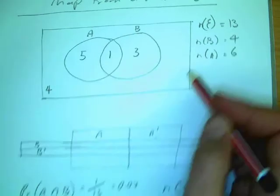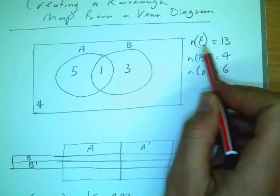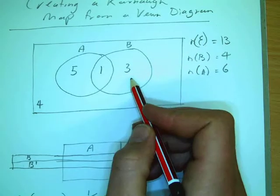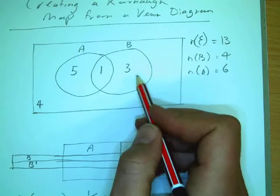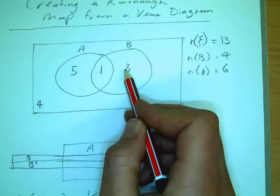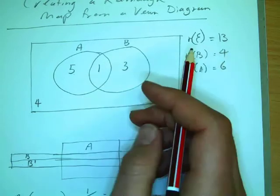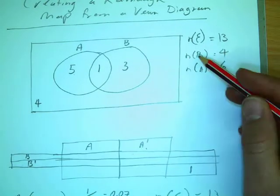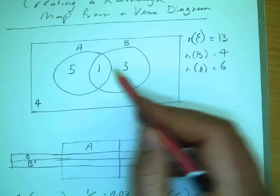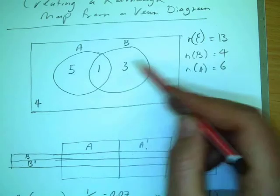The total number of elements is 13, and how do we get that? Add them all up: 5, 6, 9, 4, 13. The number in B is 3 plus 1. The number in A is 5 plus 1.